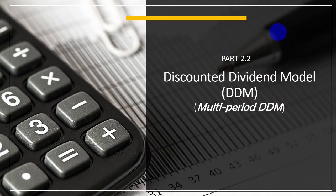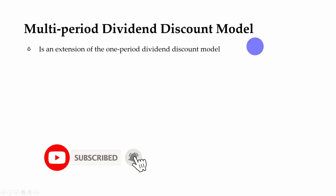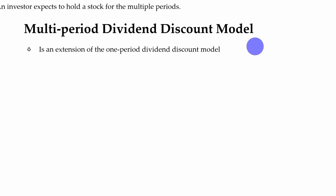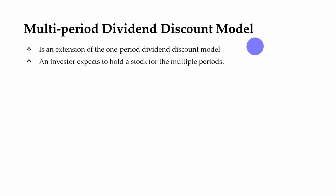Multi-period discounted dividend model is an extension of a single period discounted dividend model, where an investor is expected to hold a stock for multiple periods. But the most difficult challenge is to forecast the different dividend payments that will be used.